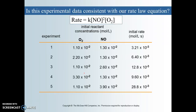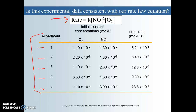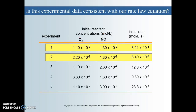Up here we have our rate law that we wrote for this reaction. Let's see if this experimental data is consistent and supports this rate law. When looking at this table, each row means we're basically just doing the experiment again. For trial number one, we did an experiment starting with certain concentrations of oxygen and nitrous oxide. Then we did another experiment with different concentrations, and so forth — there are five trials total. What's different about trial one and trial two?